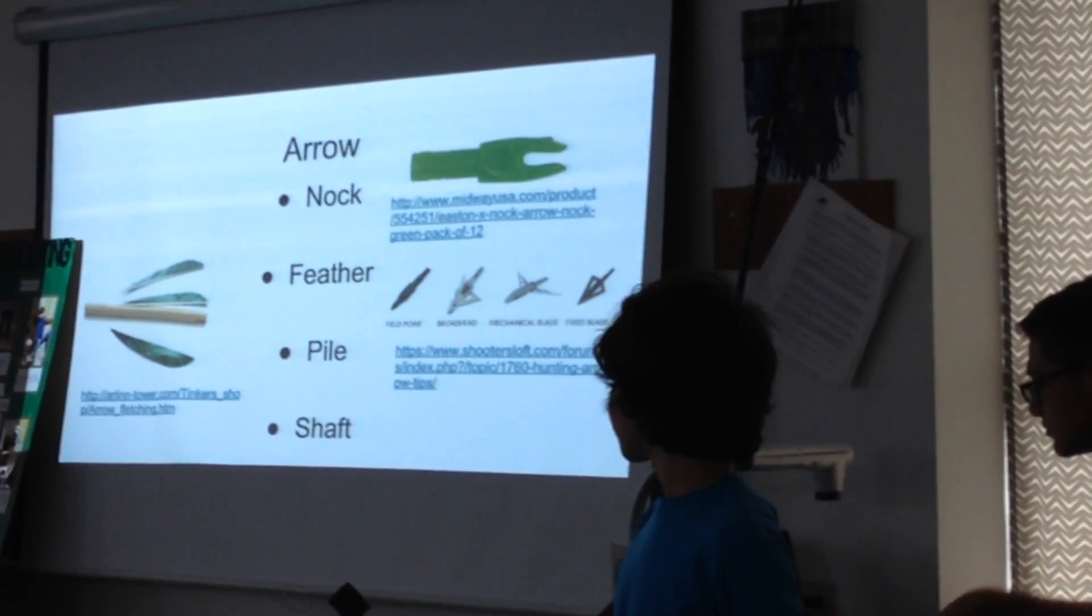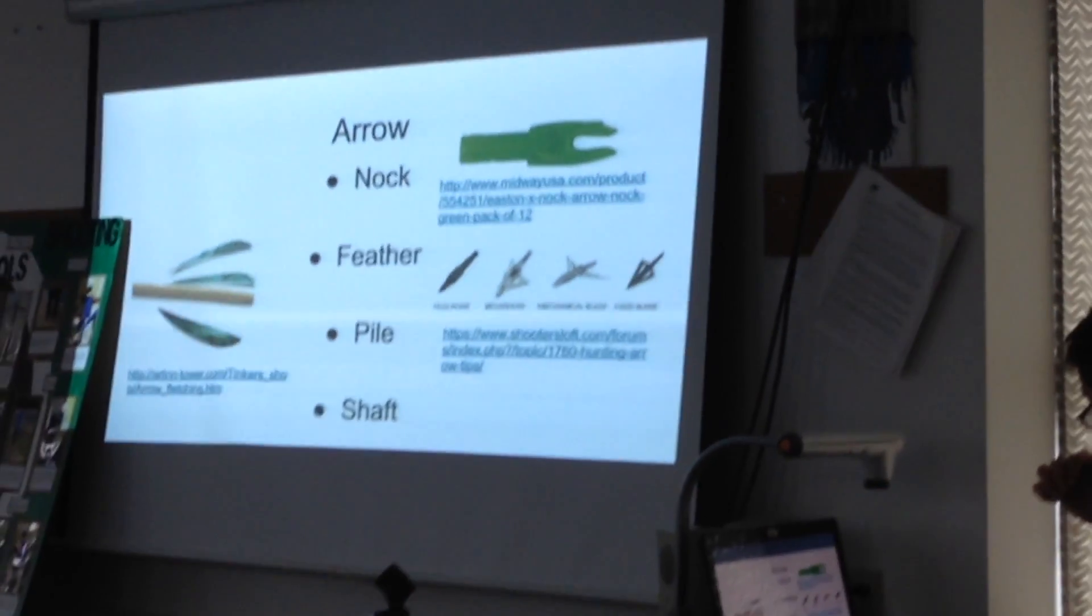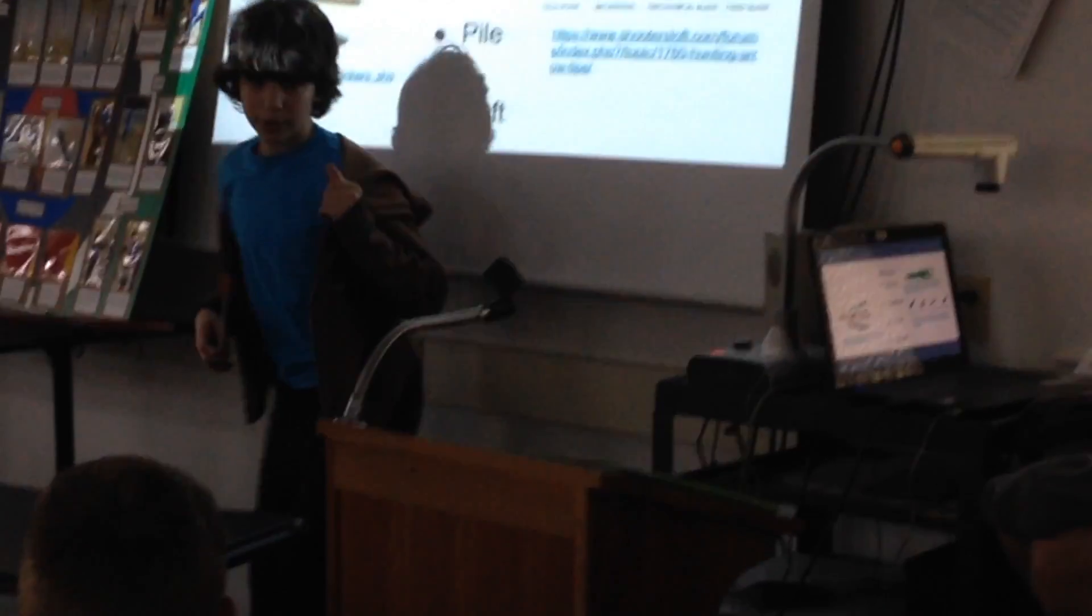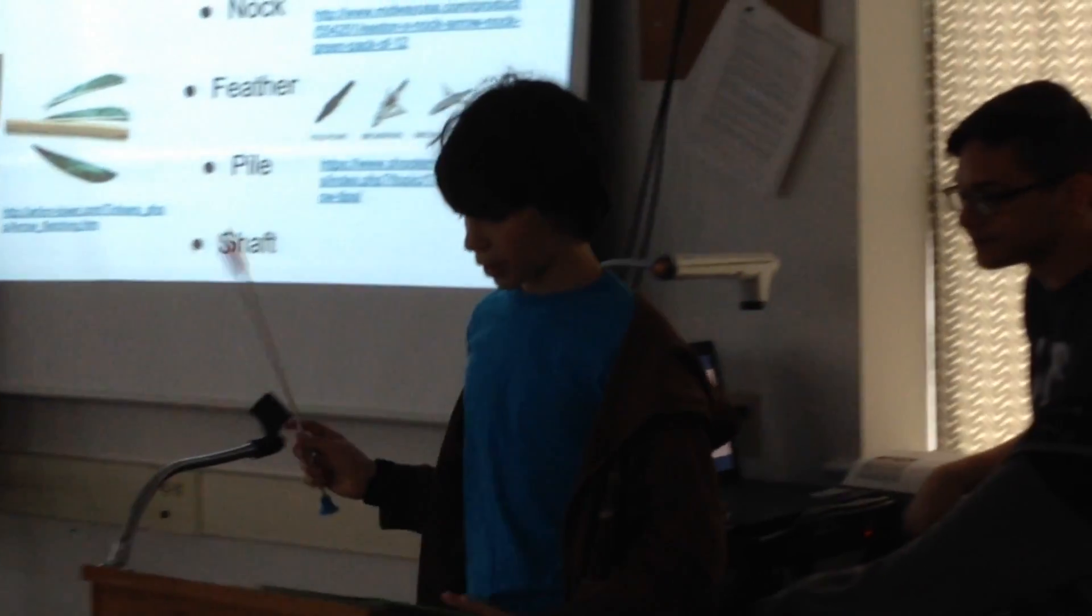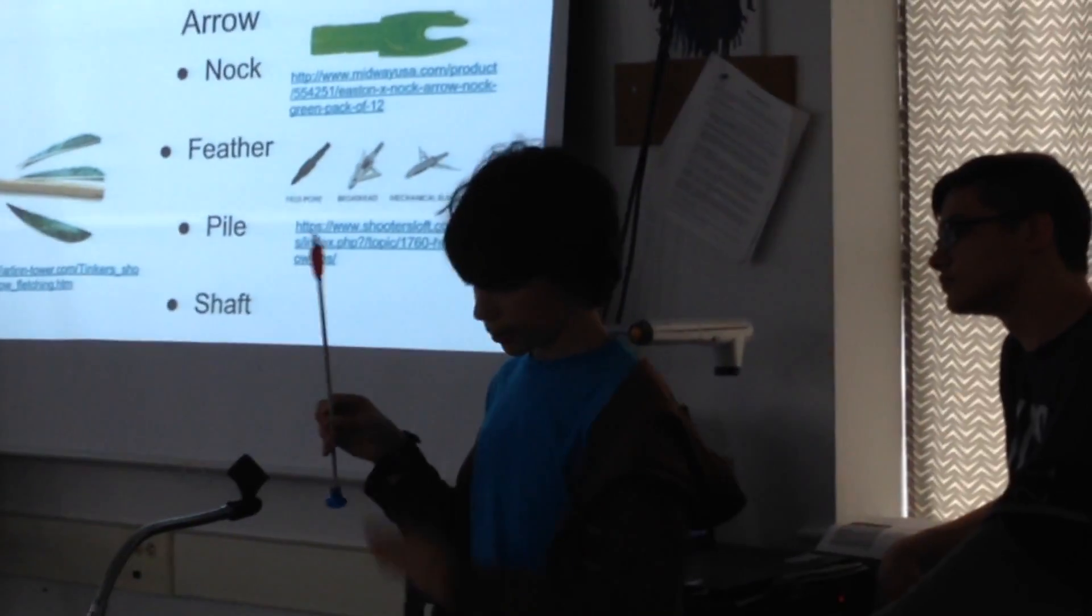The arrow - there are four main parts to it. The shaft is just the stick part. So this is a not dangerous type of arrow so I had to bring this one in, but it has the shaft here, it's just sort of the stick part.